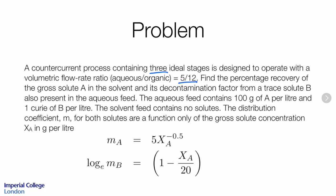We're told that the aqueous feed contains 100 grams of A per litre and 1 curie of B per litre, and the solvent feed contains no solutes — it's a pure solvent. The distribution coefficient M for both solutes is a function only of the gross solute concentration XA in grams per litre. So we have our two expressions for MA and MB, the partition coefficients for A and for B, and they're both only a function of the concentration of A.